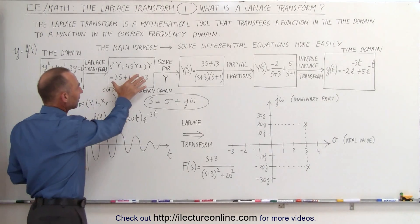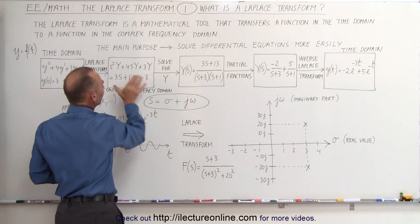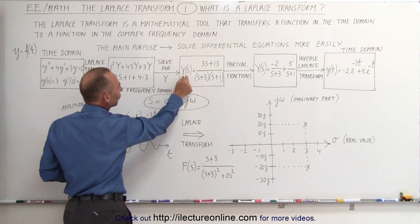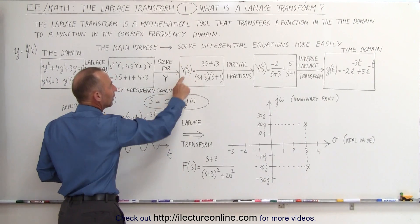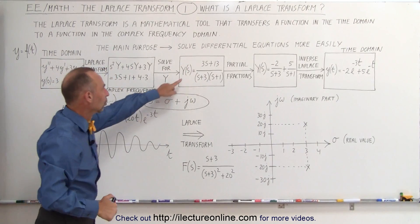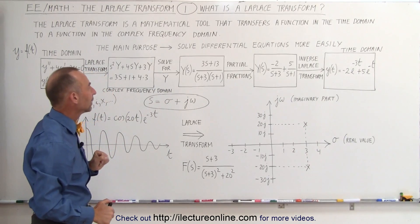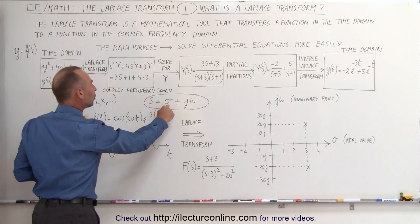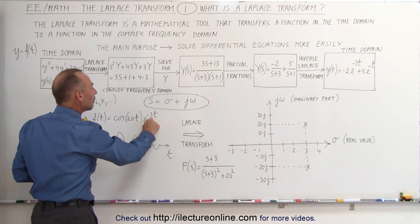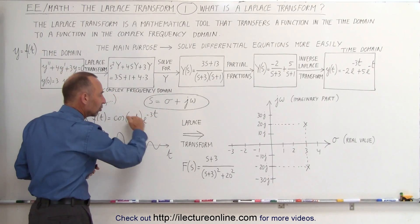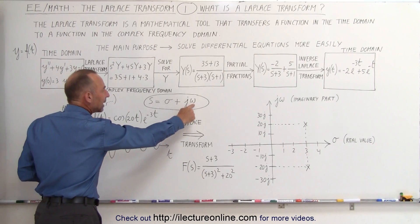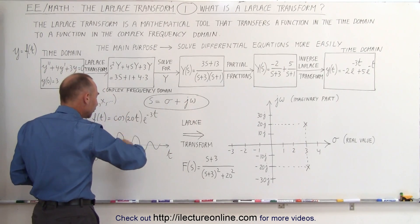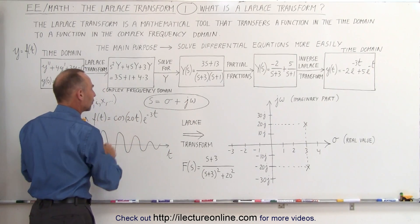We then solve that while it's in the frequency domain. We solve that equation for the variable y. Now it's capital y, which is a function of the independent variable s, which is this complex number right here. And notice, this letter here, sigma, is related to the number up here. So it's related to the exponential decay constant. And omega here is related to the actual frequency oscillation of this function here.